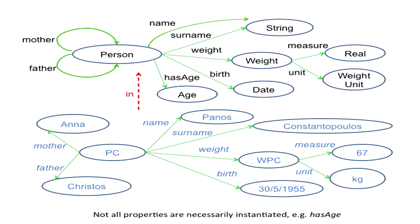The properties include name and surname, which have range string, since we can use strings to denote a name or surname. The attribute weight is a composite attribute: to quote the weight we need to give the measure — a real number — and the unit of measurement, so weight is actually an entity class consisting of a number and a unit. The same applies to any other measurement such as height or temperature. There is also the property birth with range date, and has age with range age.